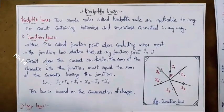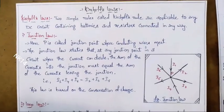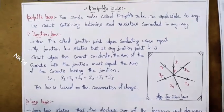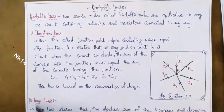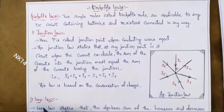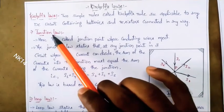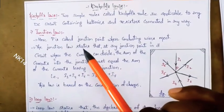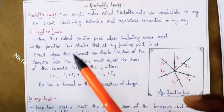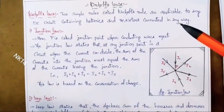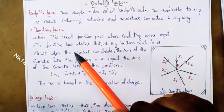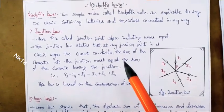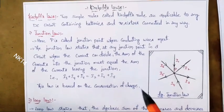Hi friends, in my previous video I already explained about Kirchhoff's laws. In the Kirchhoff's laws, we have seen one is junction law and another is loop's law. The junction law is: the sum of incoming currents at a point will be equal to the sum of the outgoing currents. I will give the link of this video in the description.